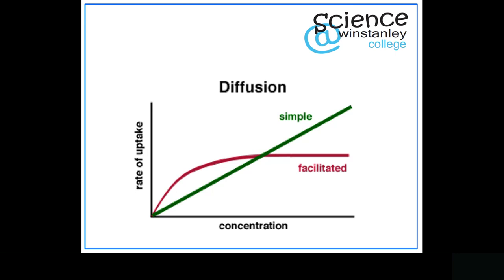Think of it like a football stadium. The turnstiles are like the channels. If there's a low concentration of people they can get through the turnstiles easily. Add a few more and they use different channels, so the rate increases. But with a massive crowd outside — a massive concentration — they can't get through quickly and have to queue. They're going through as fast as they can but there's still a queue, so the rate has levelled off. The number of channels limits the speed of facilitated diffusion.